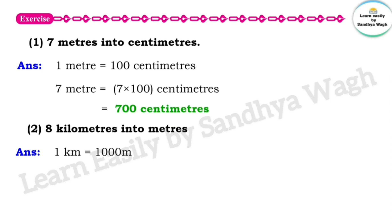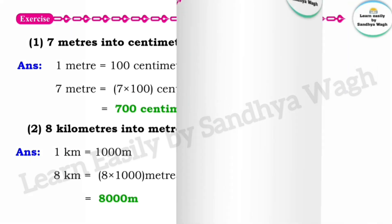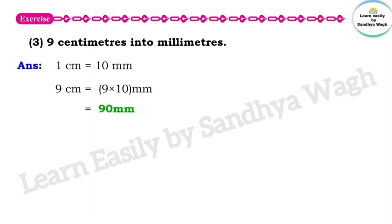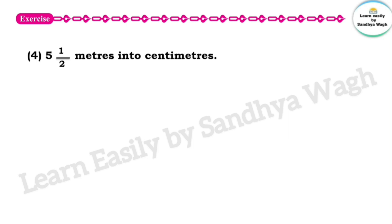So 8 kilometers is equal to 8000 meters. Next question: 9 centimeters into millimeters. 1 centimeter is equal to 10 millimeters, so 9 centimeters is equal to 90 millimeters.